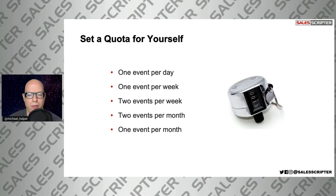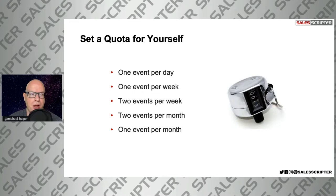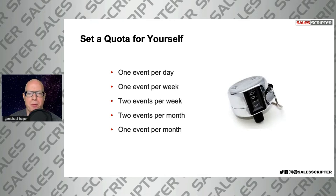One way to resist that and increase your drive and motivation is to set a quota for yourself. For example, you could say I'm going to try to go to one event per week, two events per month, two events per week — whatever that number is depending on your situation and schedule. The key is to set a rule for yourself. When you're driving home thinking should I go to that event, if you know you need to hit your quota this week and you haven't been to an event, that slight rule can prevent you from turning toward home and keep you on the path to the networking event.